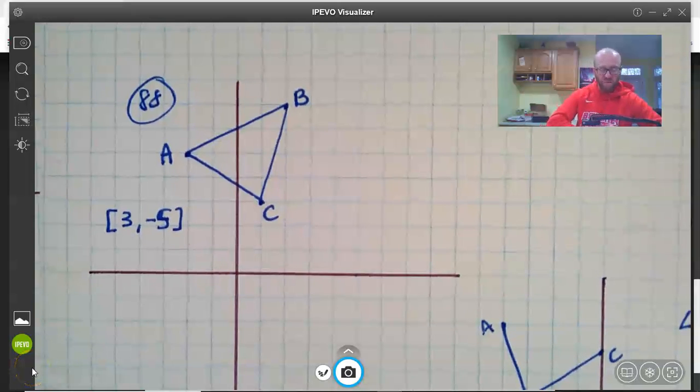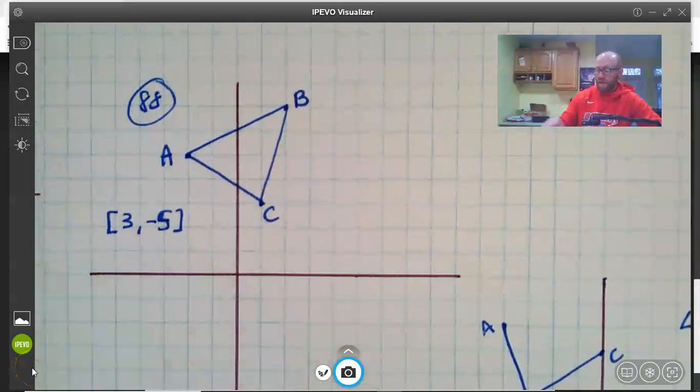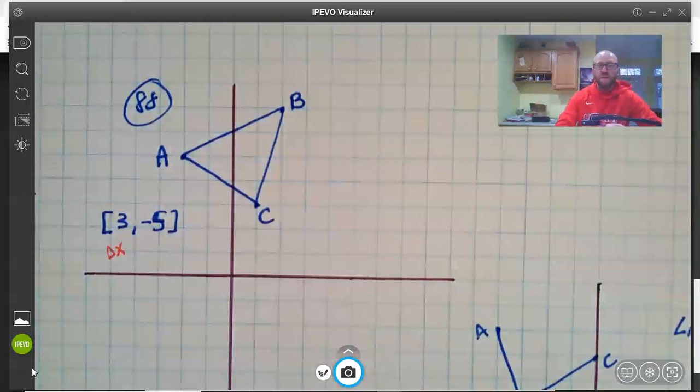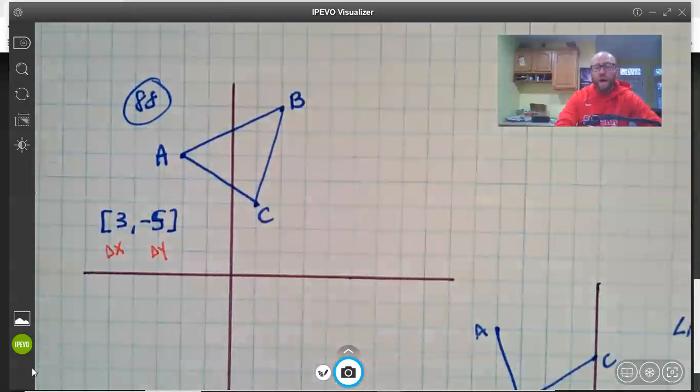Here we have triangle ABC and we're going to translate it using the vector [3, -5]. Now remember the first part of the vector is your delta x, your change in x, your left-right movement. The second part of the vector is your change in y, your delta y, your up-down movement.